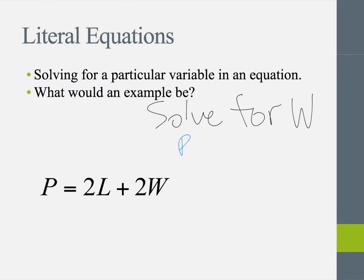Well, if I've got P equals 2L plus 2W, and I want to solve for W, I want to get W on its own side. So I'm going to subtract 2L to start. So I've got P minus 2L equals 2W. Well, how do I get W by itself? Well, I divide by 2.